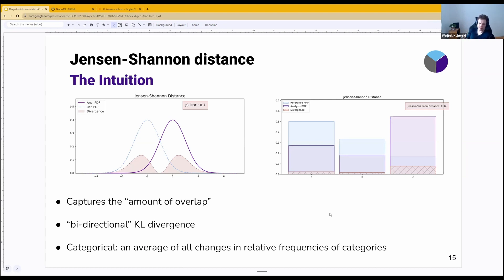And then we're going to look at the analysis distribution, which is the distribution for which, let's say, the performance has dropped. We're going to try to see how these distributions are different and how they actually look.